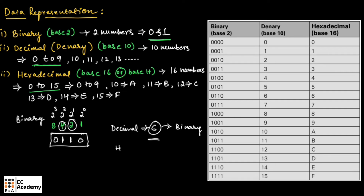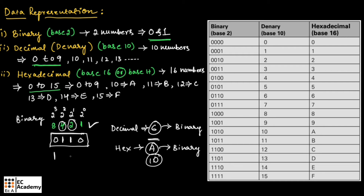In the same way, we can convert a hexadecimal number. Let us say the number is A, which should be converted into binary. A is nothing but 10, so we need to represent 10 in binary. The position with value 8 and the position with value 2 sum to 10, so those two positions are set to 1 and the remaining two positions to 0. So 10 can be represented as 1010 in binary, which means A in hexadecimal equals 1010.